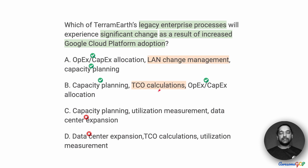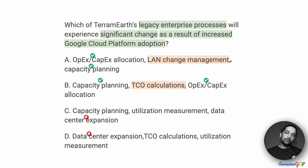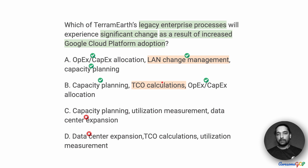We are left with land change management versus TCO calculations. For land change management, there is a huge change — we don't have to do that at all, similar to data center expansion. For TCO calculations, my argument was that yes there are some changes, but the line items are going to be similar with differences in values. So my vote is for land change management as changing significantly, and TCO calculations not so much. I'm going to go for option A, and hopefully you have come up with some answer yourself.